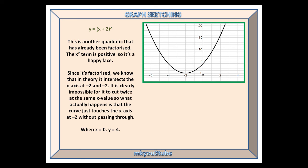Since it is factorised, we know that, in theory, it intersects the x-axis at minus 2 and minus 2. It is clearly impossible for it to cut twice at the same x-value, so what actually happens is that the curve just touches the x-axis at minus 2 without passing through. And when x is 0, y is 4.